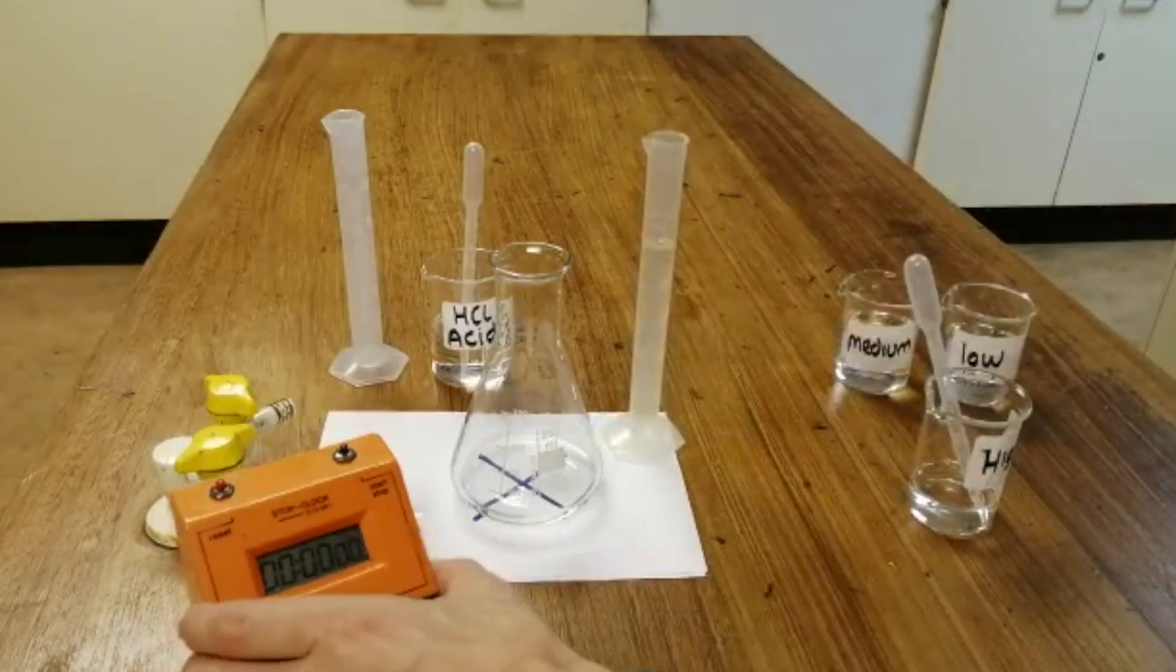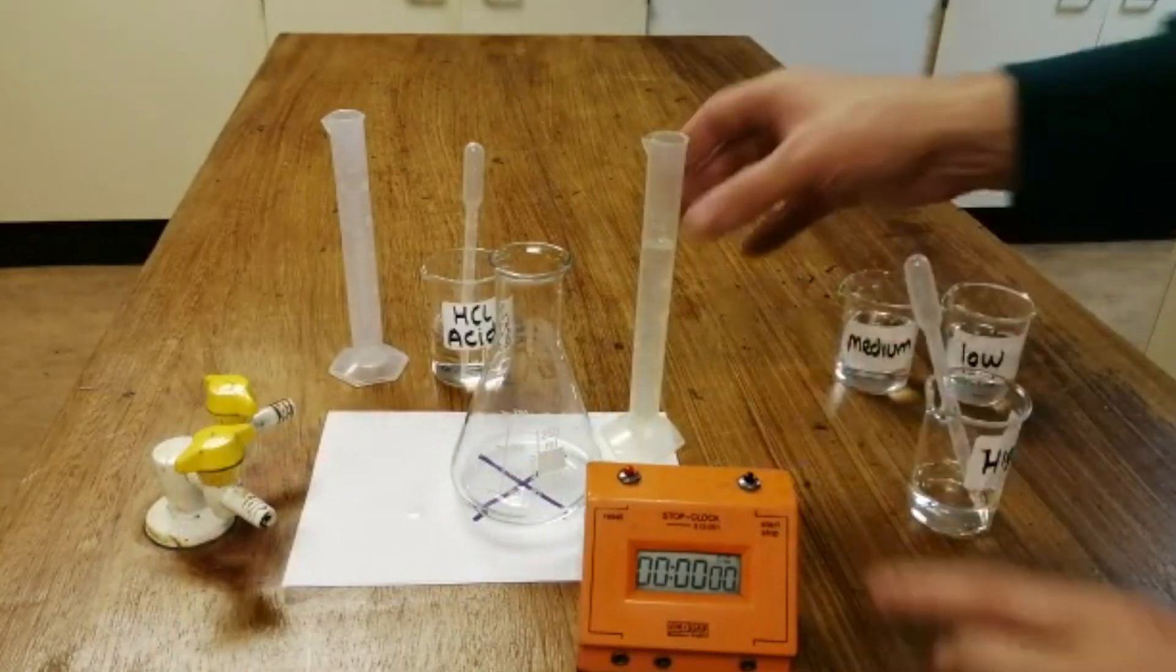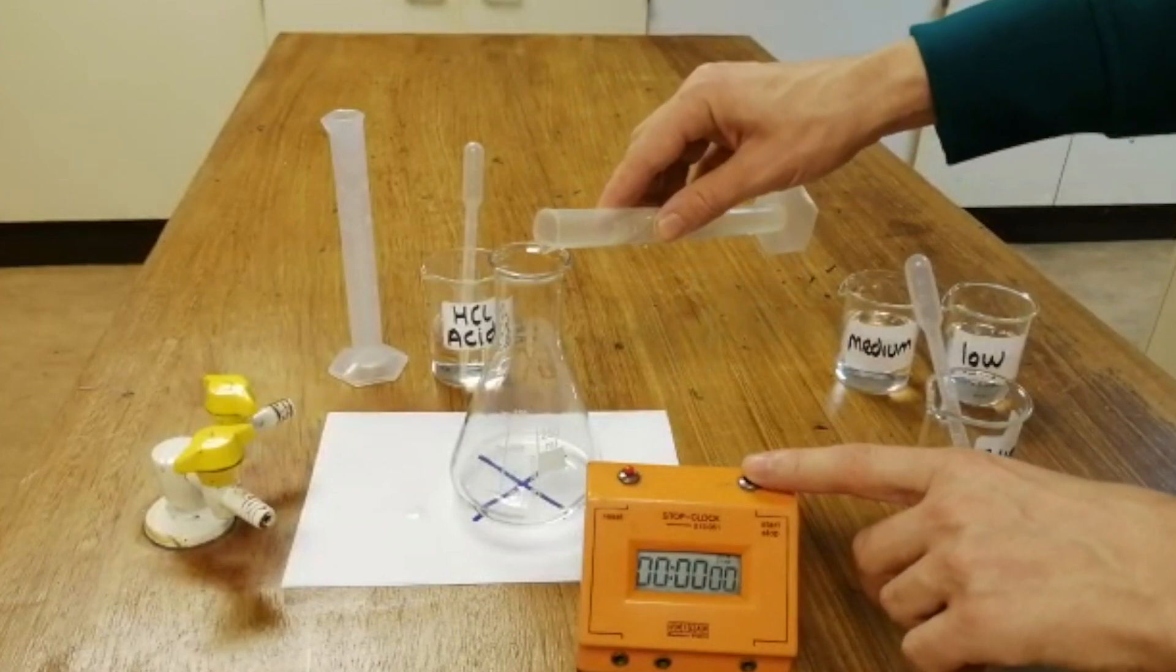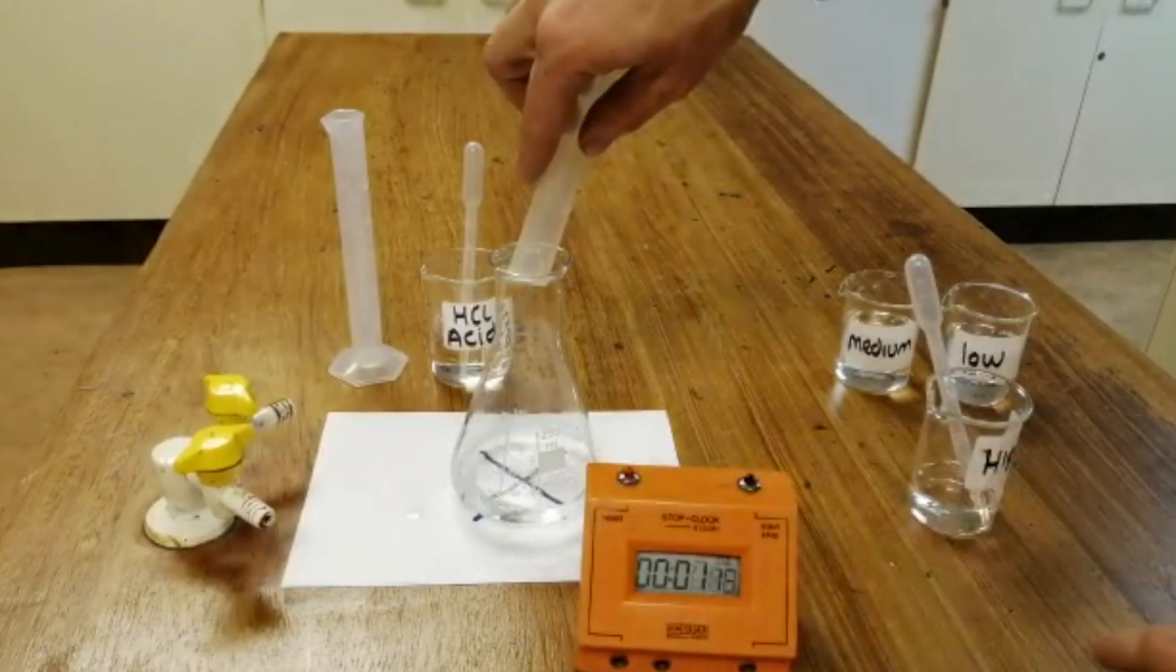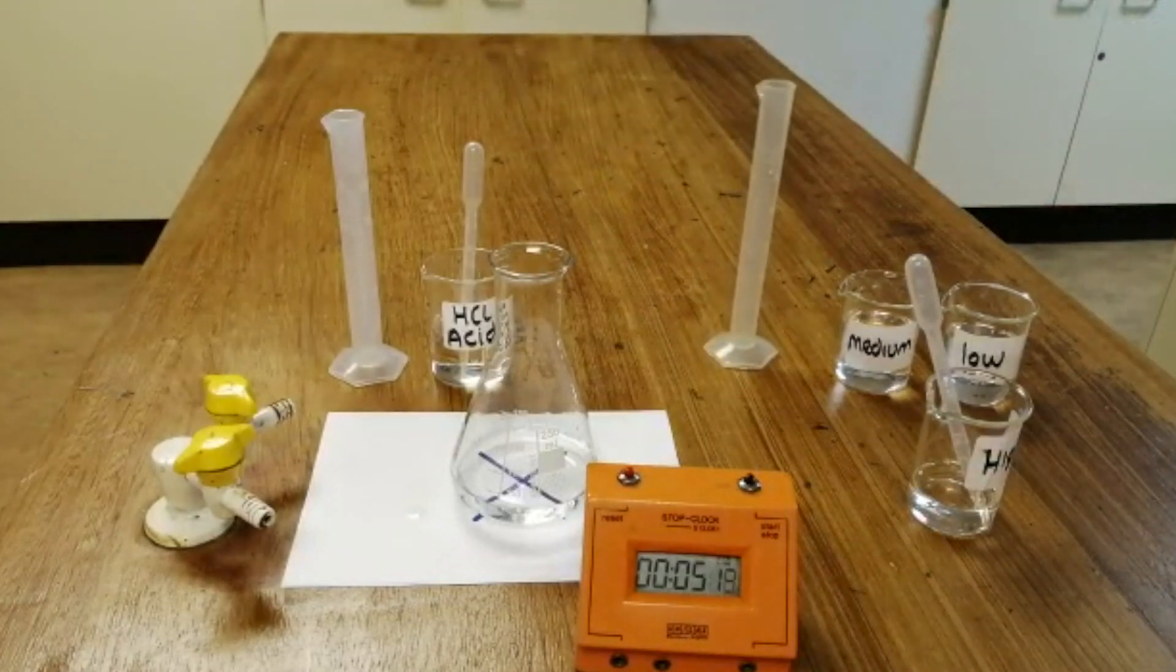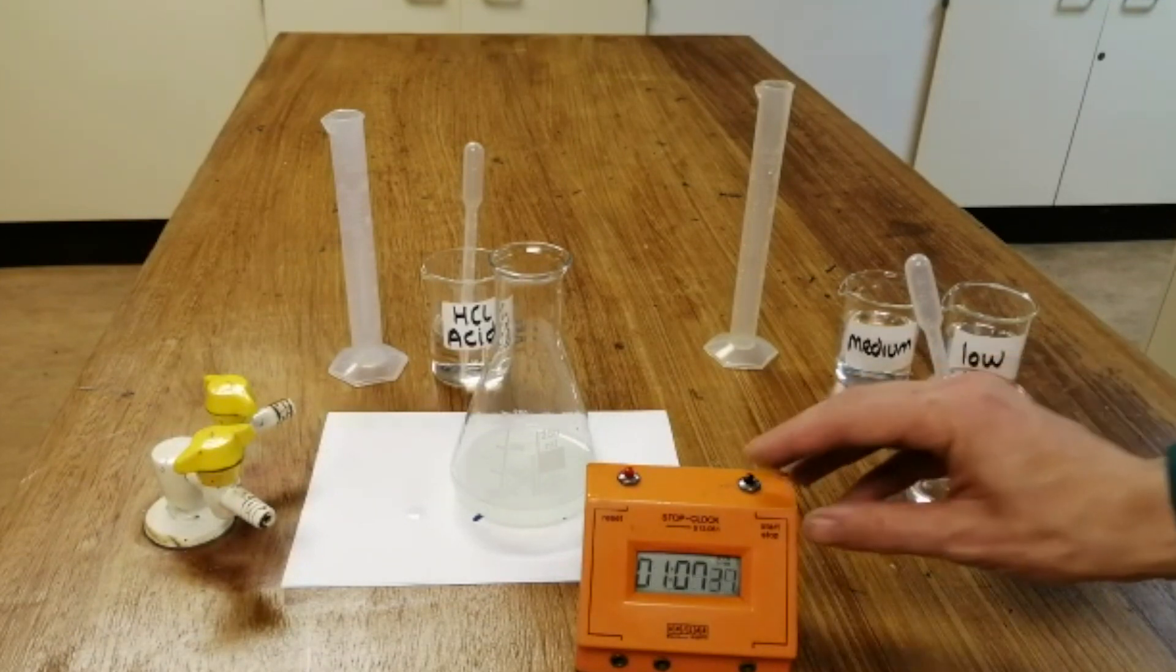Before I add the sodium thiosulfate, I get my stop clock ready. And I'm going to start the stop clock at the same time that I add the thiosulfate. And I will stop timing when I can no longer see the cross through the liquid. And stop.